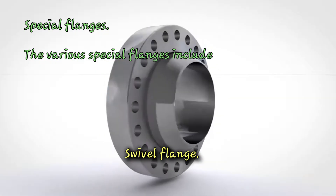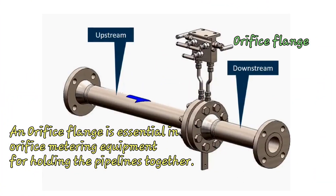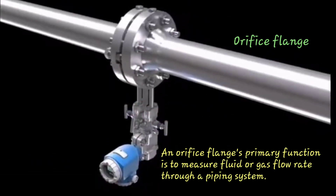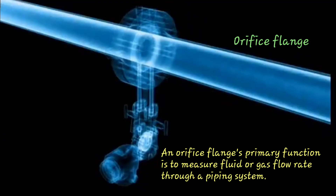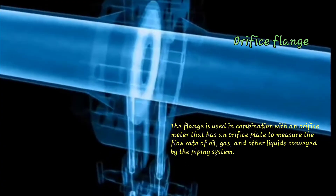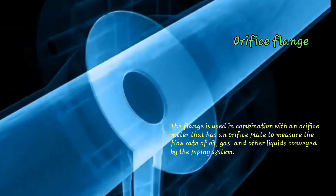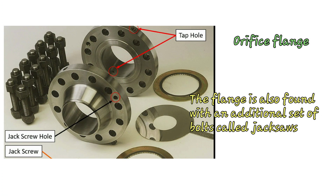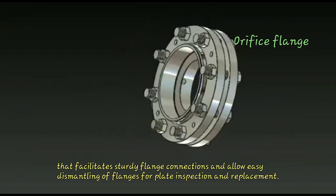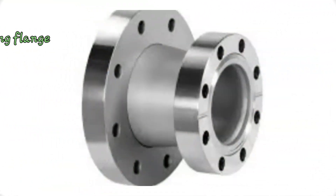Special flanges include the orifice flange, reducing flange, nepo flange, expanding flange, elbow flange, and swivel flange. The orifice flange is essential in orifice metering equipment for holding pipelines together. Its primary function is to measure fluid or gas flow rate through a piping system, used in combination with an orifice meter that has an orifice plate to measure the flow rate of oil, gas, and other liquids. The flange is also found with an additional set of bolts called jackscrews that facilitate sturdy flange connections and allow easy dismantling for plate inspection and replacement.